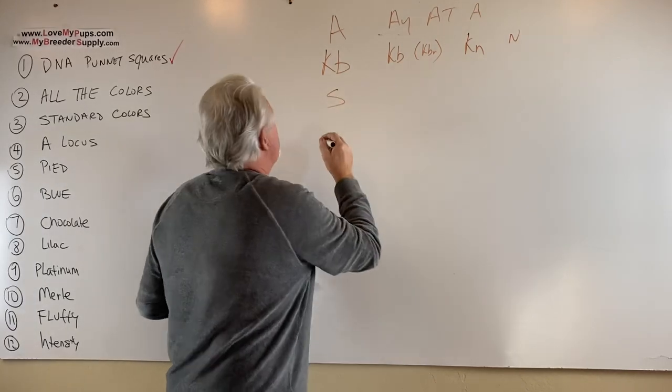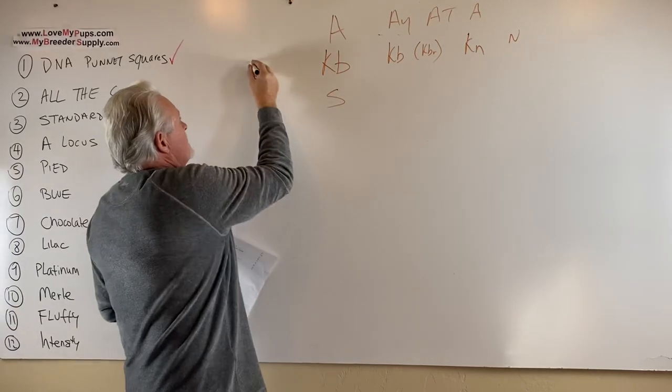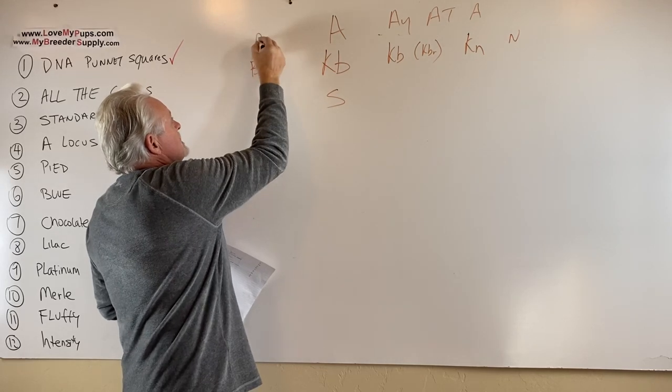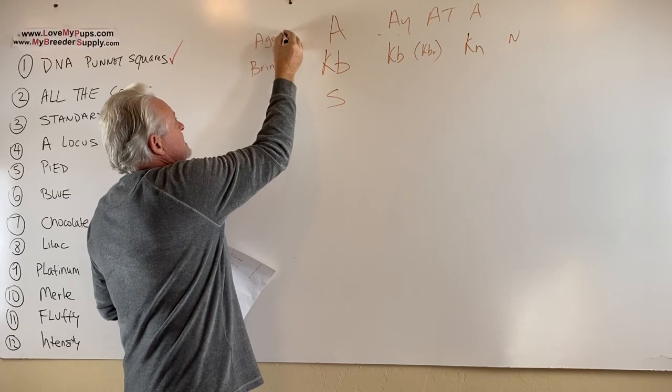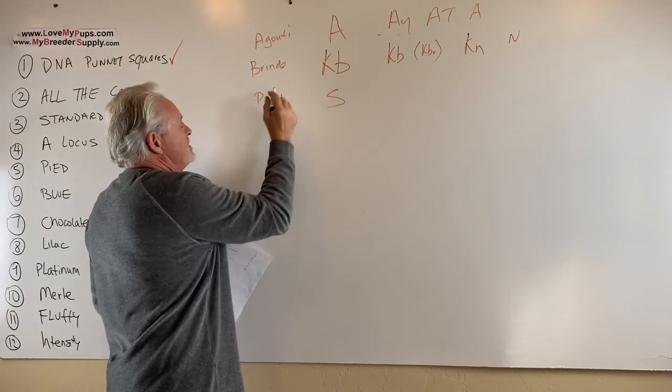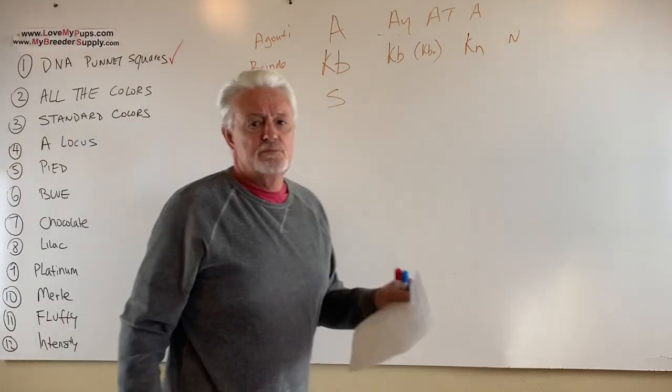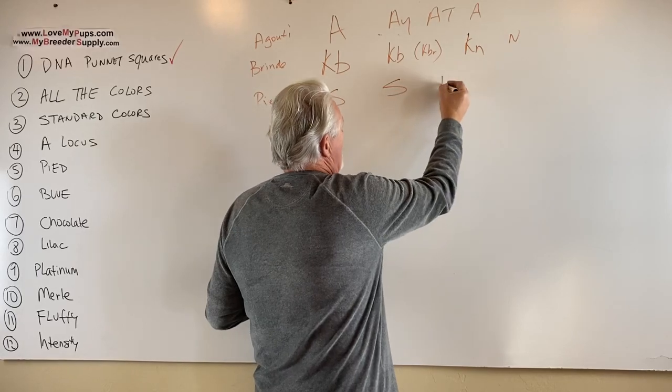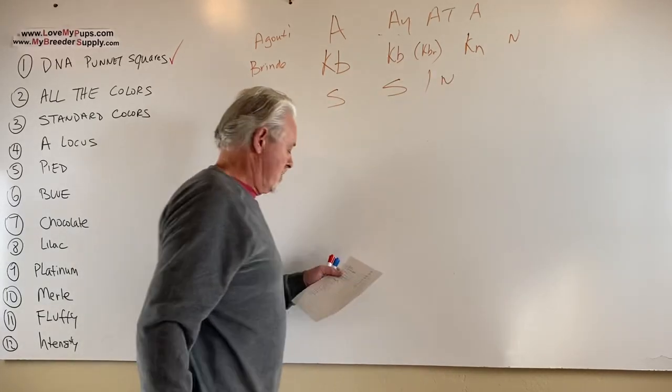S is the piebald. I'm going to write down the side of this. This is the Brindle gene. This is called AGOUTI. God knows what that stands for. But anyway, it's AGOUTI. This is the piebald gene. This is the one that's responsible for a dog that has spots. So this one is either S, which you have it, or N, you don't have it. Those are the two options on that one.